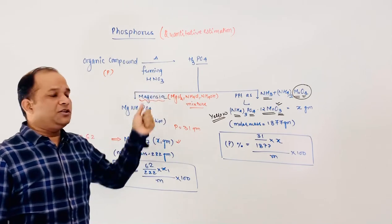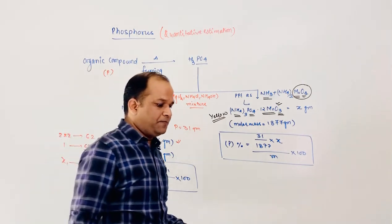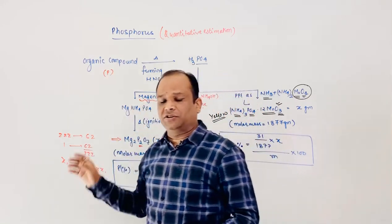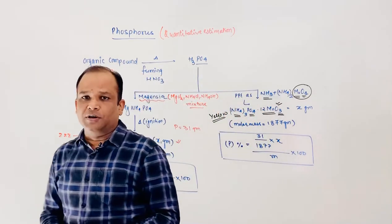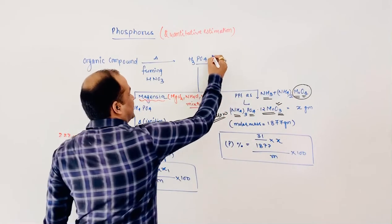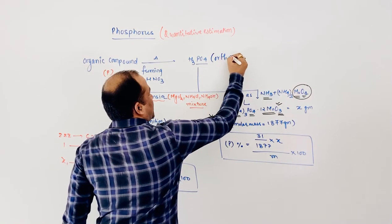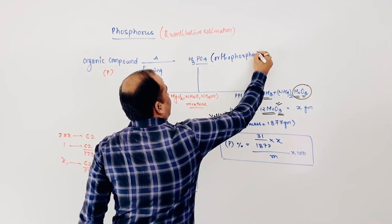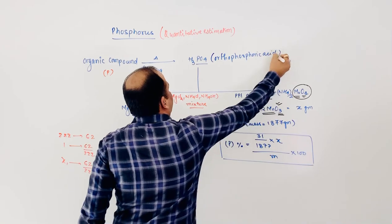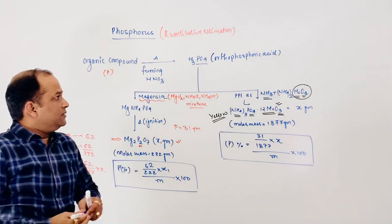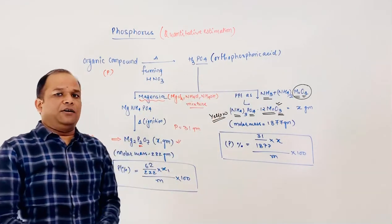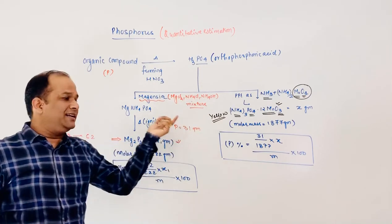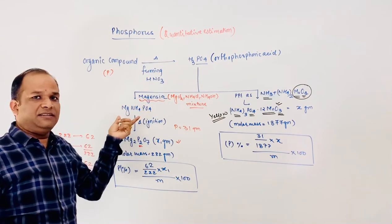Fuming HNO3 is an oxidizing compound. It converts the phosphorus present in the organic compound into H3PO4, which is also referred to as orthophosphoric acid or phosphoric acid. This phosphoric acid is then treated with either of two methods.